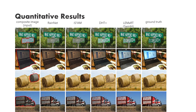In this slide, we compare the harmonized images produced by Lamart against three state-of-the-art methods: RayNet, IS2AM, and DHT+. We see that the images generated by our method are more photorealistic, thanks to the knowledge it learns during pre-training.